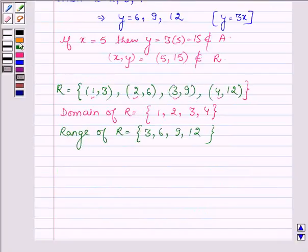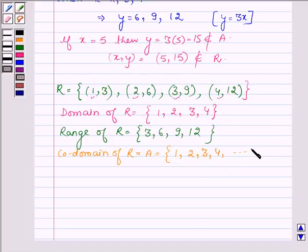Now, lastly we have to find the co-domain of R, which will be the set A itself, that is the set having elements 1, 2, 3, 4 up to 14.